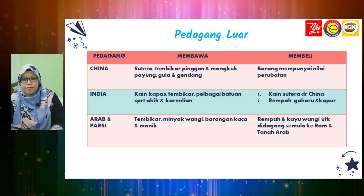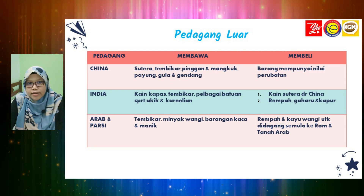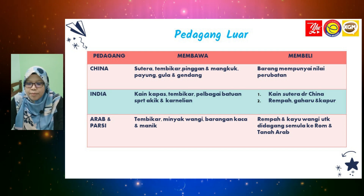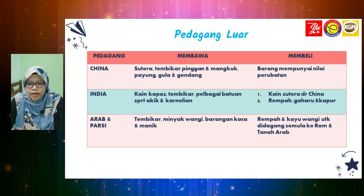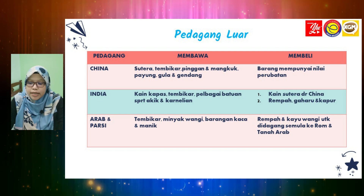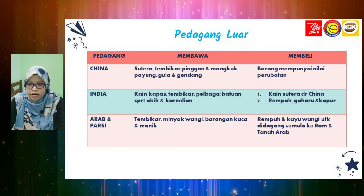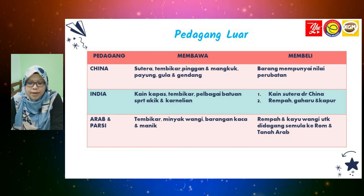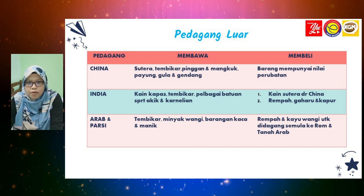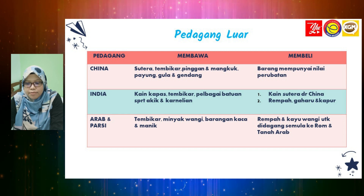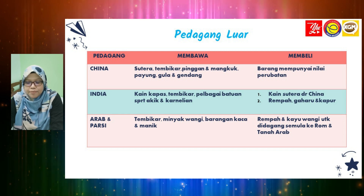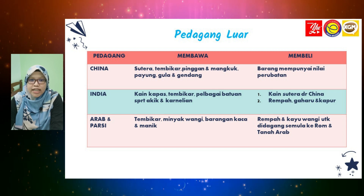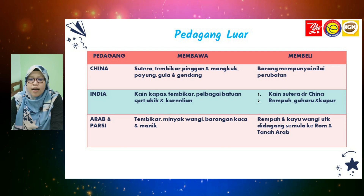Pedagang daripada India datang membawa kain kapas, tembikar, dan pelbagai batuan seperti akik dan karnelian. Manakala mereka membeli kain sutera dari Cina dan rempah, gaharu dan kapur. Pedagang daripada Arab dan Parsi pula datang membawa tembikar, minyak wangi, barangan kaca dan manik. Mereka membeli rempah dan kayu wangi untuk didagangkan semula di Rom dan tanah Arab.